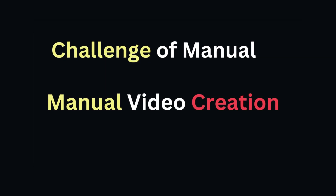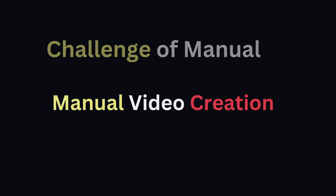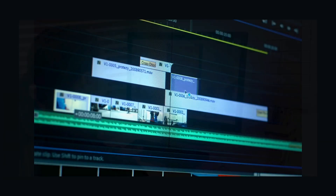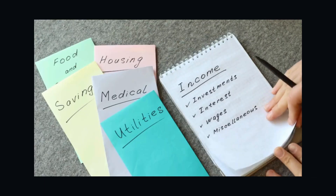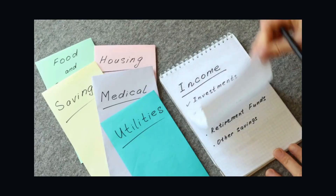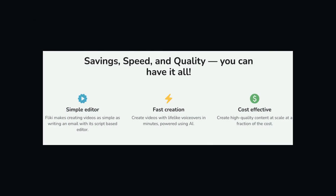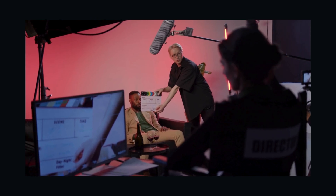The challenge of manual video creation. Let's be honest. Script writing, filming, editing, sourcing visuals and music — it all adds up. These tasks drain your time, energy, and often your budget. Fleeky AI and other AI text-to-video generators aim to address these pain points, revolutionizing the industry.